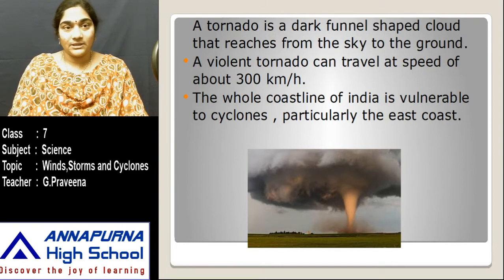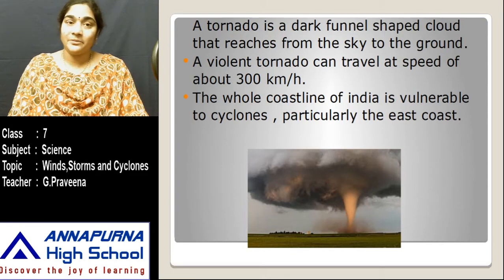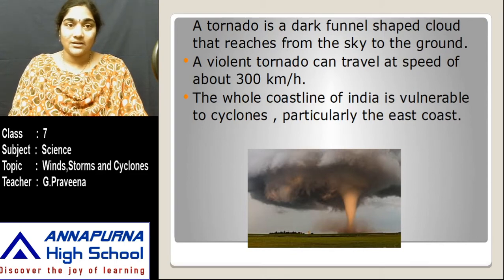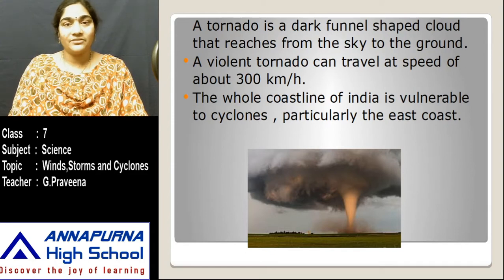Apart from cyclones, we are going to learn about tornadoes. The main difference between a cyclone and a tornado is that cyclones occur over water, whereas tornadoes take place on land. A tornado is a dark funnel-shaped cloud that reaches from the sky to the ground.